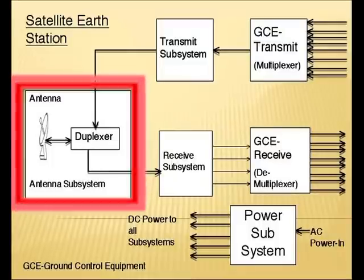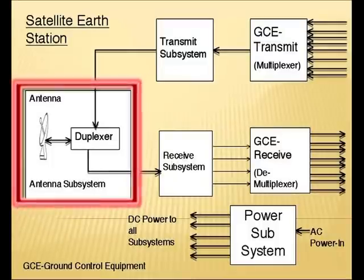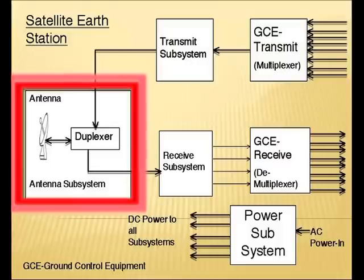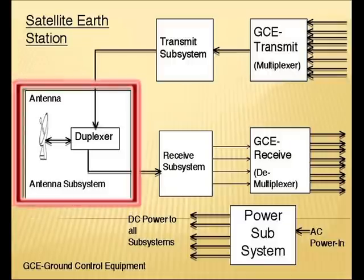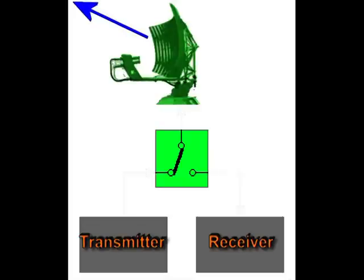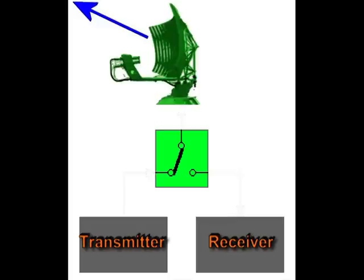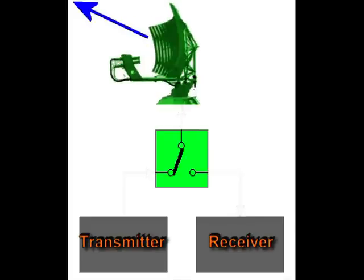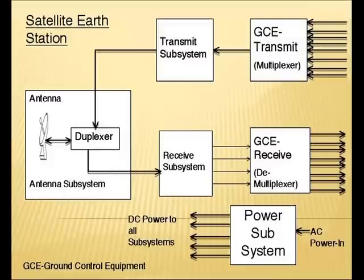The antenna subsystem consists of an antenna and a diplexer. A highly directional antenna is required for telecommunication and broadcasting purposes. These directional beams are produced by reflector type antennas. The parabolic reflector is the most common type of antenna. Whenever a single antenna is used for both transmitting and receiving, an electronic switch must be used. Here, the diplexer acts as a switch which protects the receiver from high radiation of the transmitter and directs the weak received signal only to the receiver, not to the transmitter.